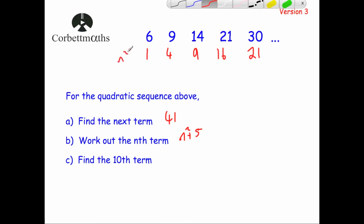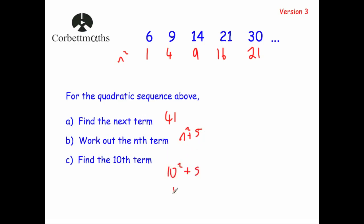This example was quite simple because the given sequence is just 5 more than the n² sequence. If it weren't that simple, you'd find the difference and work out the nth term for it. For part C, find the 10th term: substitute 10 into the nth term — 10² + 5 = 105. So the 10th term is 105.